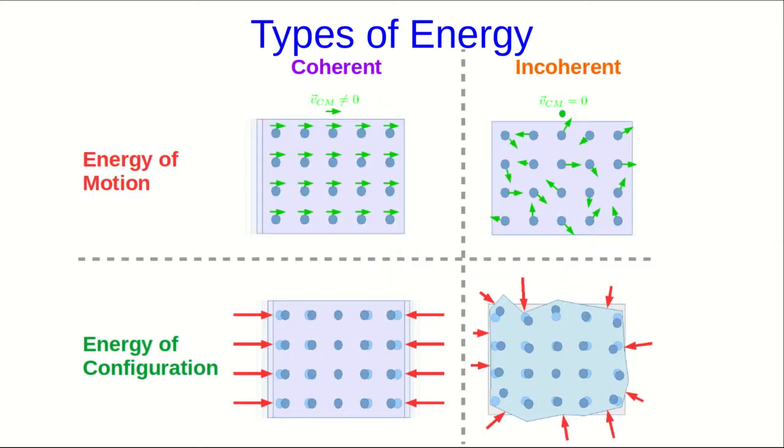One way we can organize all the types of energy into a conceptual picture is by splitting it up into energy of motion, energy of configuration, or how things are arranged, or their positions.